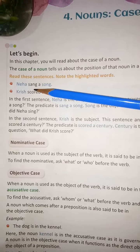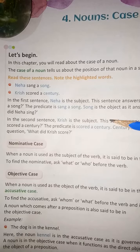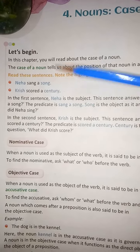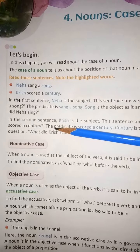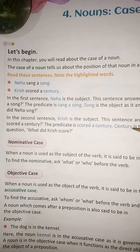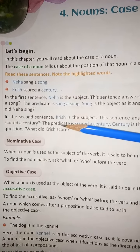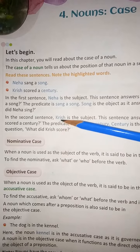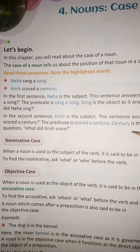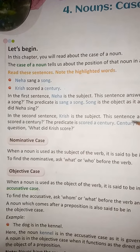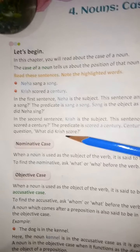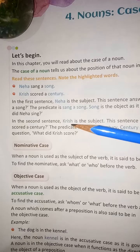'Song' is the object, as it answers the question: what did Neha sing? In the second sentence, Krish is the subject — this sentence answers the question: who scored a century? 'Century' is the object, as it answers the question: what did Krish score?